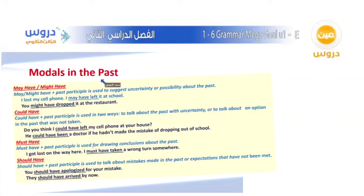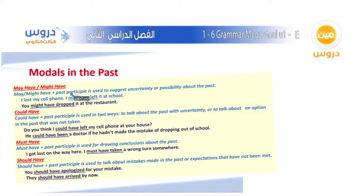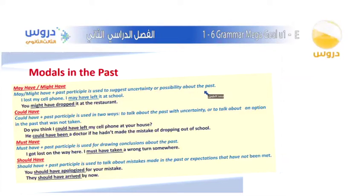Now we will talk about modals in the past. May have or might have — that is, may or might, plus have, plus the past participle. Past participle means the third form. For example: write is present, wrote is past, written is the past participle. May and might have plus the past participle is used to suggest uncertainty or possibility about the past.